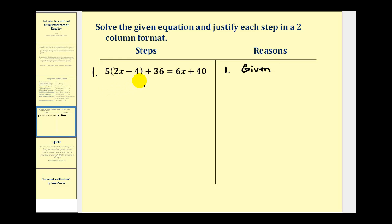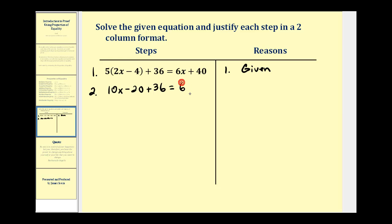Now if we were going to solve this equation, the next step would be to distribute the five. So let's go ahead and do that, then write the justification or reason on the right. If we distribute, we would have 10x minus 20 plus 36 equals 6x plus 40. Our justification would be the distributive property of equality — I'm just going to write 'distributive property.'